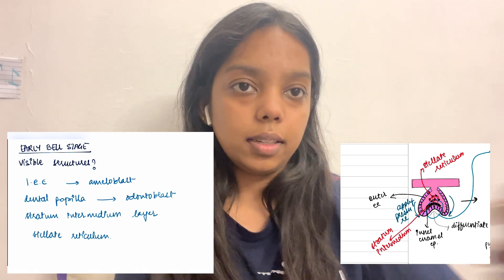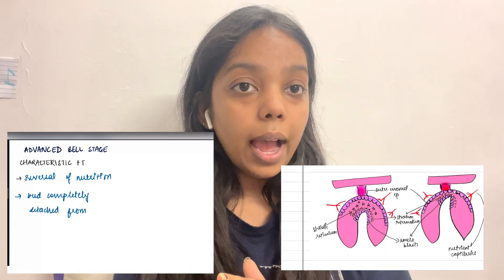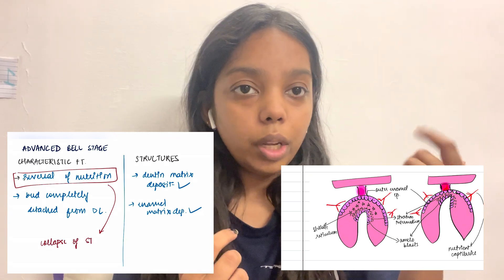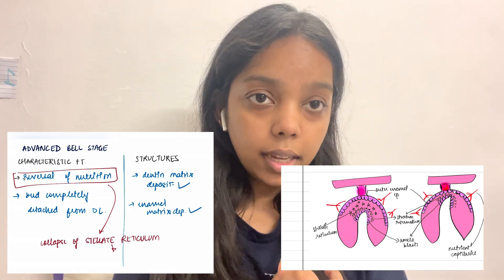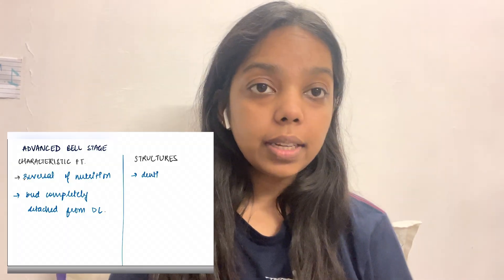In the early bell stage, the stratum intermedium layer and stellate reticulum cells are also seen. In the advanced bell stage, the characteristic features include: first, reversal of nutrition, in which the stellate reticulum collapses and the enamel organ is supplied by surrounding blood vessels. Second, the bud is completely detached from the dental lamina. Also, enamel matrix deposition and dentine matrix deposition both begin.